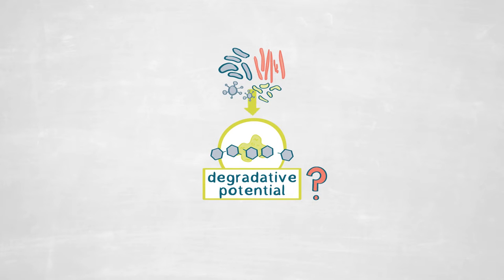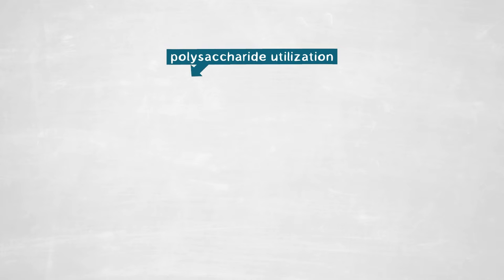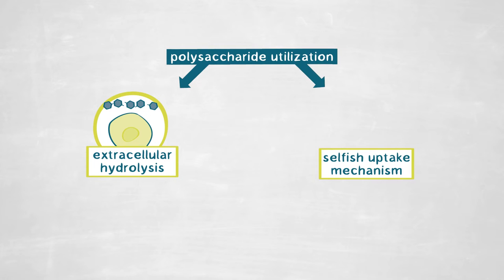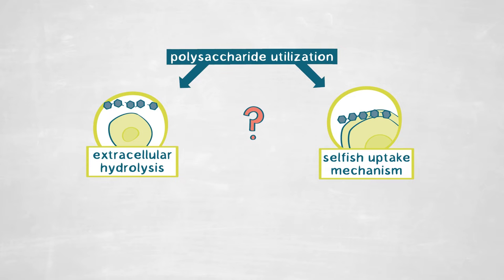Our research focuses on the degradative potential of bacteria on these complex substrates such as polysaccharides. So far, two different ways of bacterial polysaccharide utilization are known. One is extracellular hydrolysis, where the polysaccharide is degraded into smaller subunits outside the cell, and only these subunits are small enough to be taken up. In contrast, the selfish uptake mechanism means the whole polysaccharide is taken up into the bacterial periplasm where it is further degraded. We are mainly interested in the balance of which mechanism is used and which bacteria have the capability to use them.